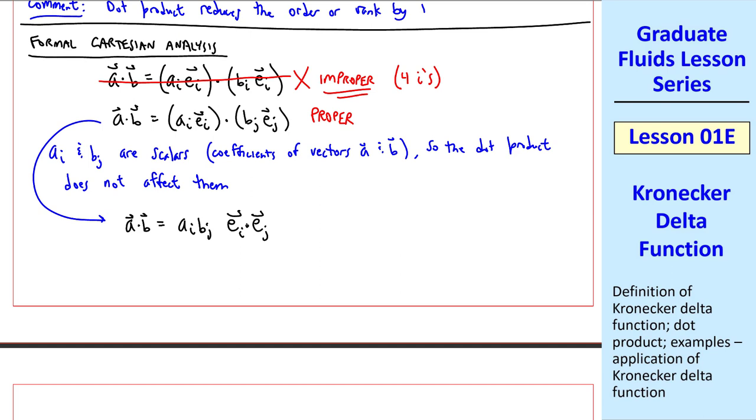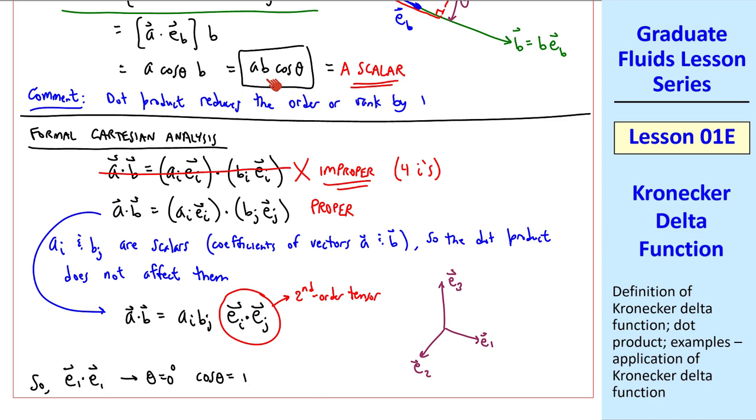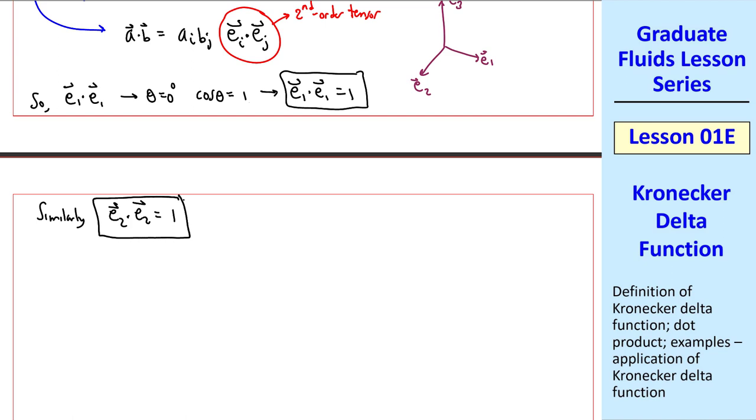From our rules for tensor notation, we have four repeated i's. So instead, let's use dummy index j for b. This one is proper. Now we want to move these around. We have to be very careful. a i and b j are just scalars themselves. They're coefficients of vectors a and b. So the dot product does not affect them. They could come outside of this equation. So a dot b is a i b j, e i vector, e j vector, with a dot product. This itself is a second-order tensor.